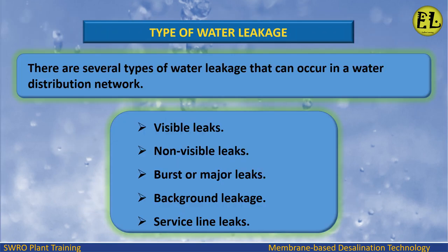There are several types of water leakage that can occur in a water distribution network: visible leaks, non-visible leaks, burst or major leaks, background leakage, and service line leaks.